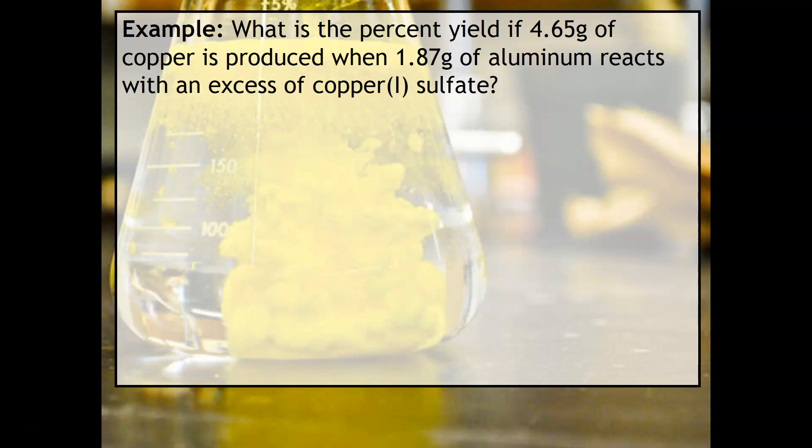For example, what is the percent yield if 4.65 grams of copper is produced when 1.87 grams of aluminum reacts with an excess of copper(I) sulfate? You know me by now - I did not give you the balanced equation, so that's the first thing you need.